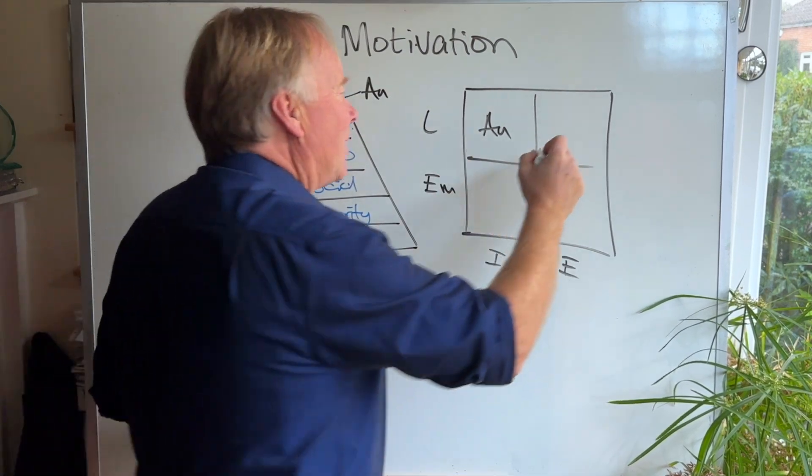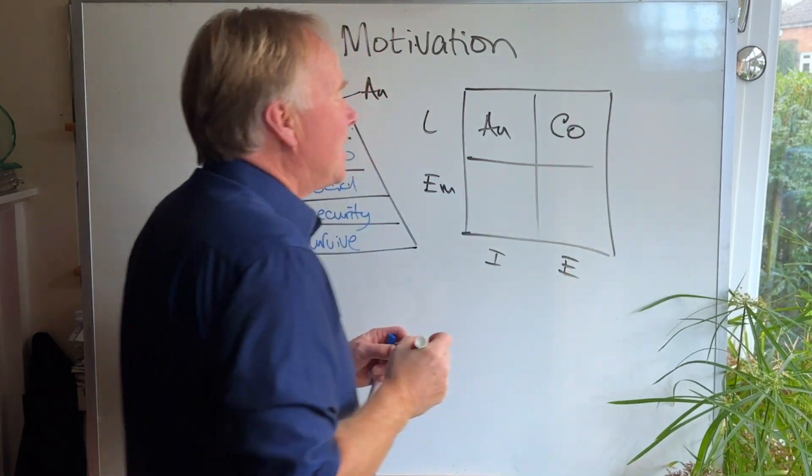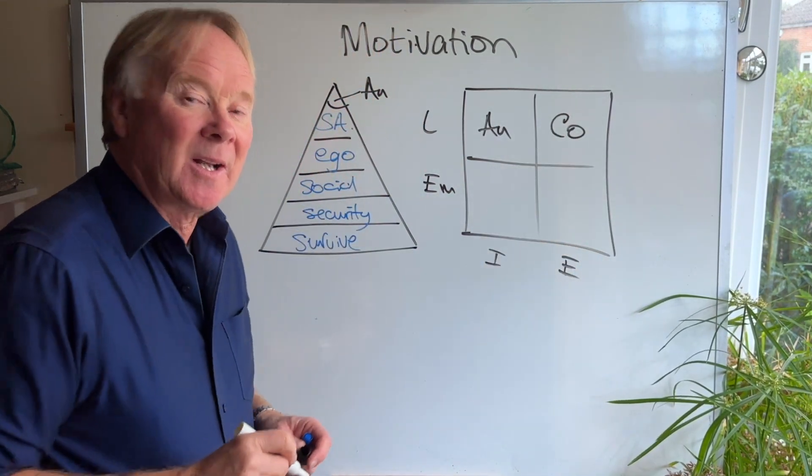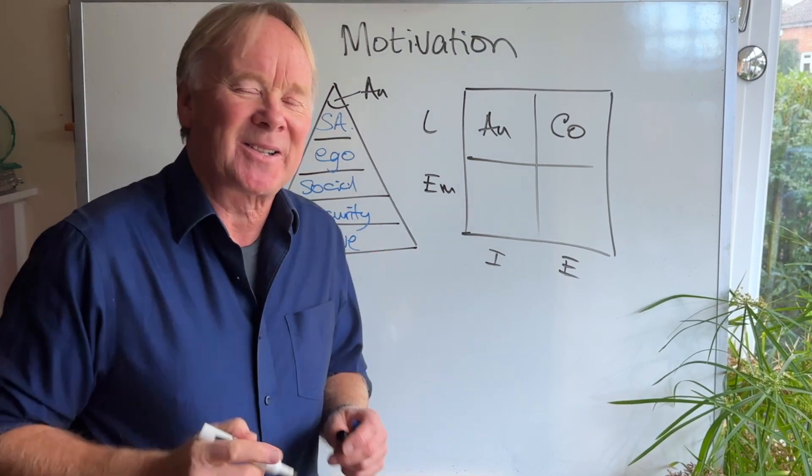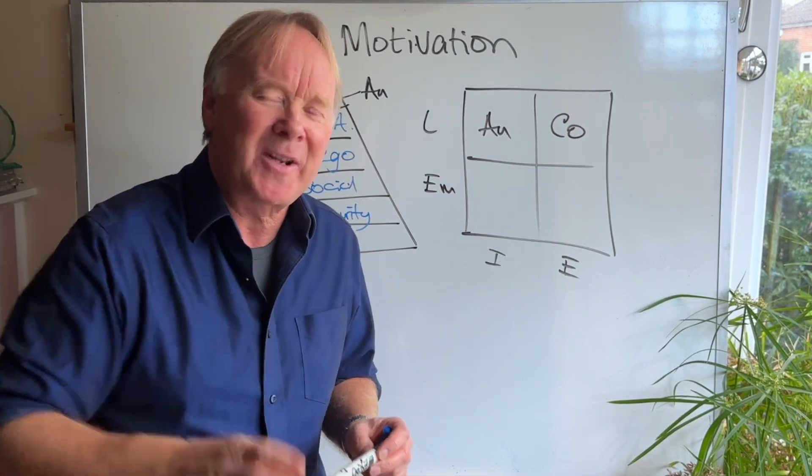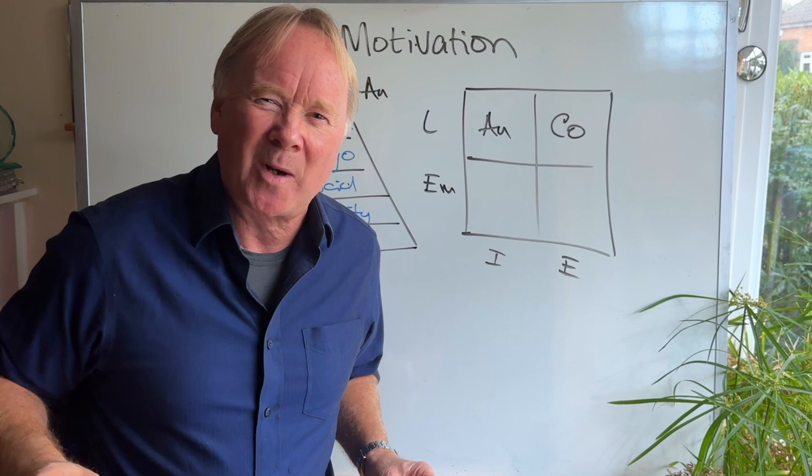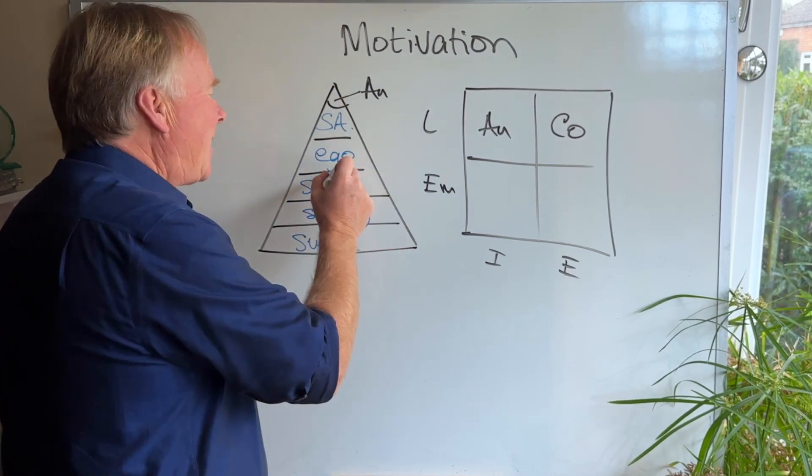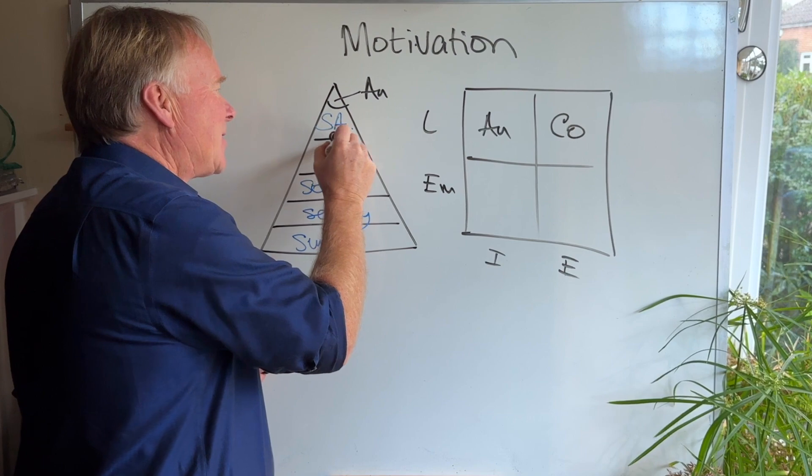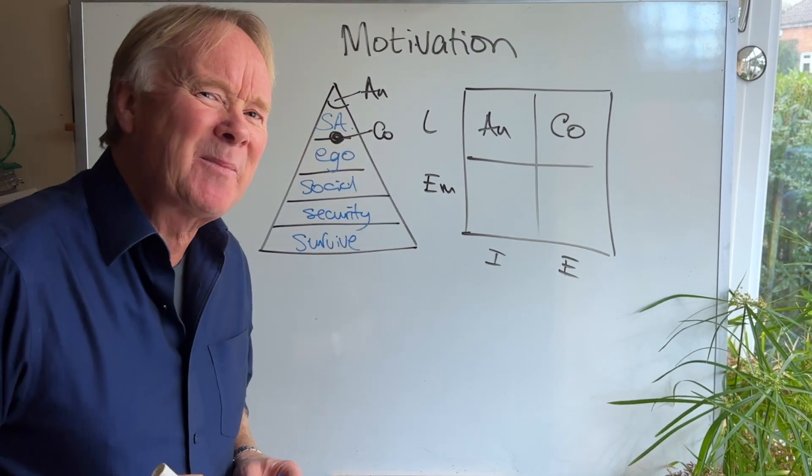The second type of person is the controller. This person is much more extrovert, but also logical. They're interested in things like results. So to motivate them, you just give them freedom and authority to get on with the work without rules. So they're more to do with status, but also results. The controller is sort of here on Maslow.